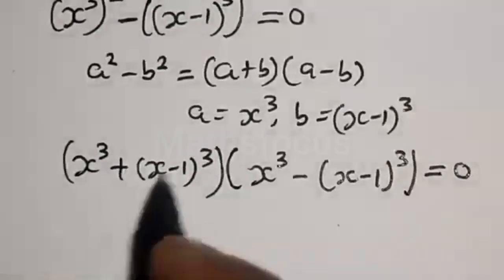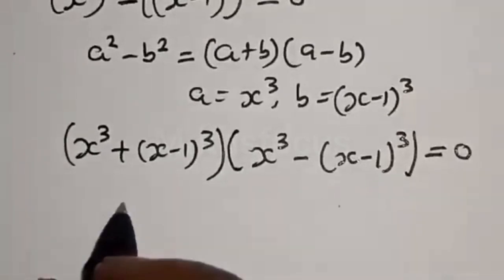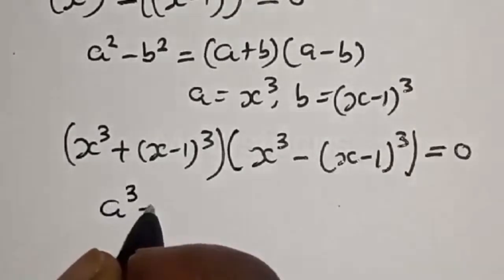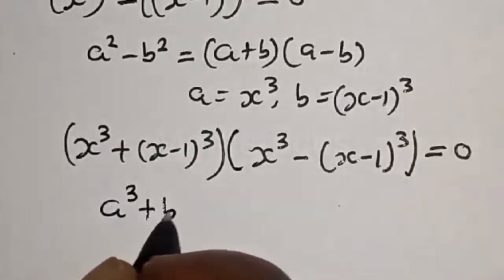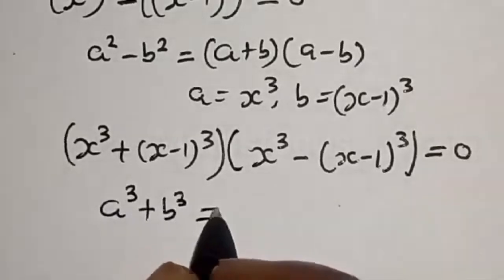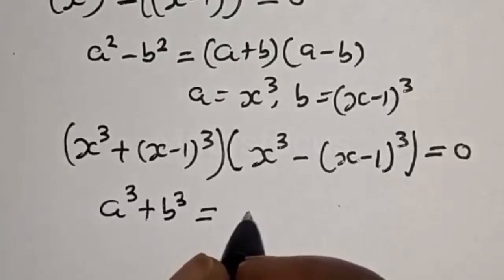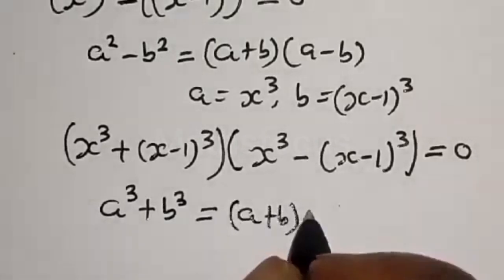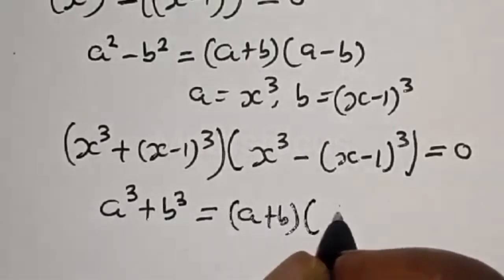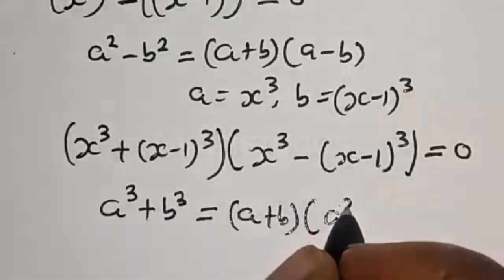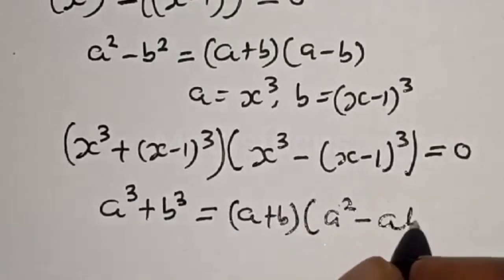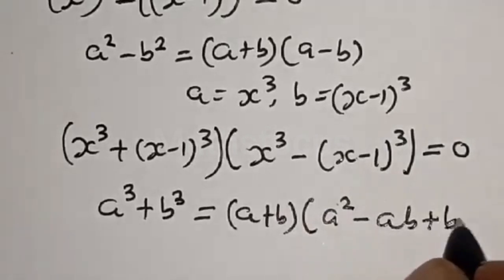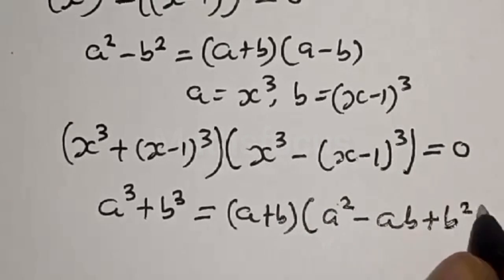Also take note of the rule that a raised to power 3 plus b raised to power 3 is equal to a plus b multiplied by a squared minus ab plus b squared.